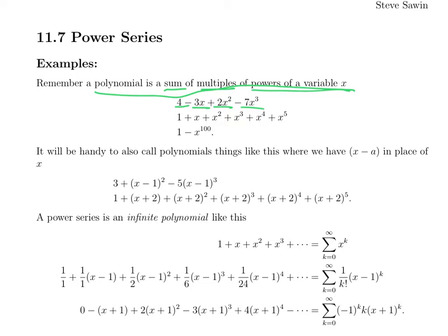All of these things are polynomials. I want to extend that a little bit and also say things like this are polynomials, where instead of x we have x minus a or x plus something. We'll think of that as x minus negative 2. We're going to call those polynomials as well.